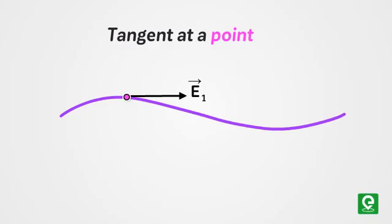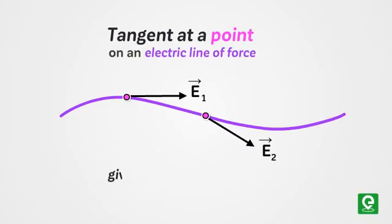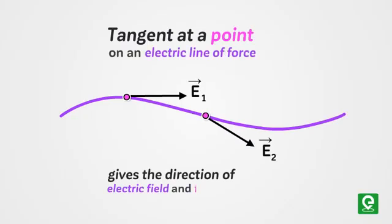The tangent at a point on an electric line of force gives the direction of the electric field and force at that point.